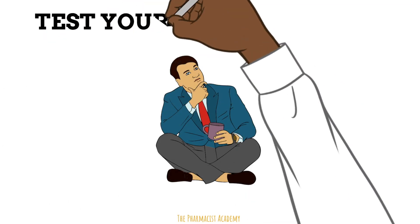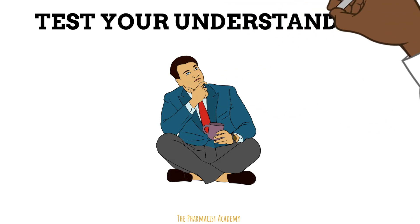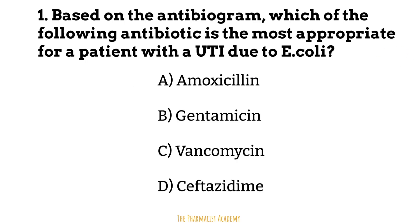Let's test our knowledge with some practice questions based on this antibiogram. First: which antibiotic is most appropriate for a patient with a UTI due to E. coli? There is no vancomycin or ceftazidime susceptibility data for E. coli, so we can eliminate those two. Between amoxicillin and gentamicin, gentamicin has a higher percentage susceptibility with a comparable number of isolates tested, making it the more appropriate choice.